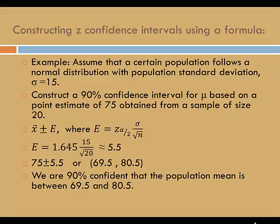So, we are 90% confident that the population mean is between 69.5 and 80.5.